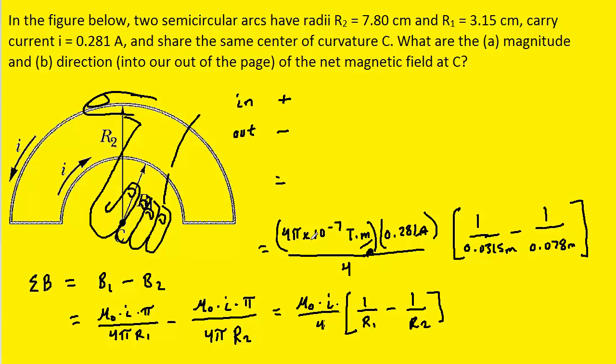So we'll pick up our calculators and type this in. And when we do that, we get about 1.67 times 10 to the minus 6 Tesla, which is the standard unit of magnetic field. So this is the magnitude of the total magnetic field. Notice that it came out to have a positive value. And we defined positive as being into the page. So the direction of this magnetic field would be into the page. And so we have successfully calculated the answers to both parts A and B.